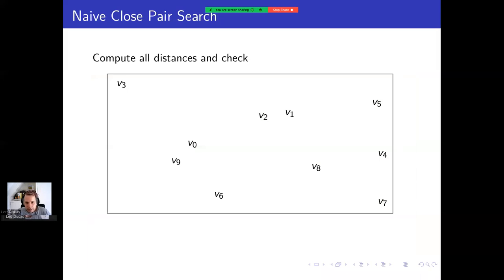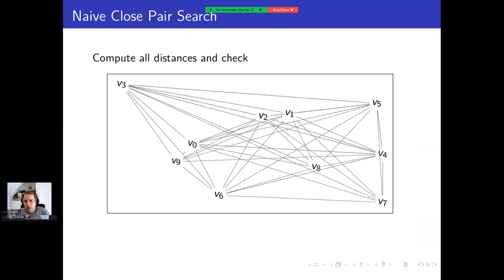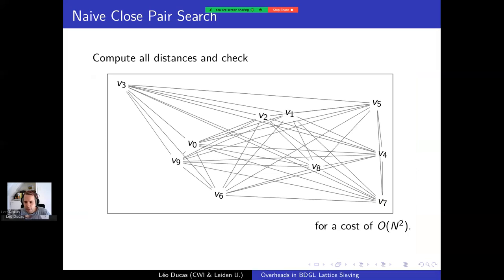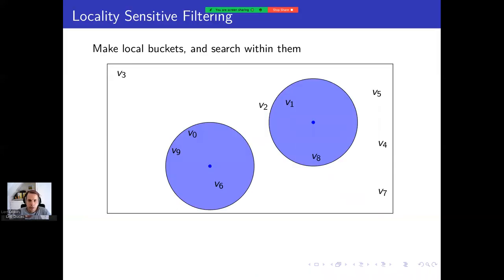So let me come back to the sieving algorithm. Here is a naive search for close-by pairs. We take the points one at a time and we compute the distances to all the other points and we check whether each of these distances is small. And we repeat this for each point until we visited them all. We've now considered a quadratic number of pairs of points and computed their distance.